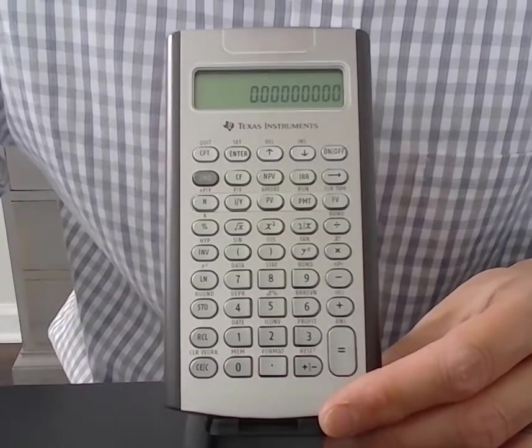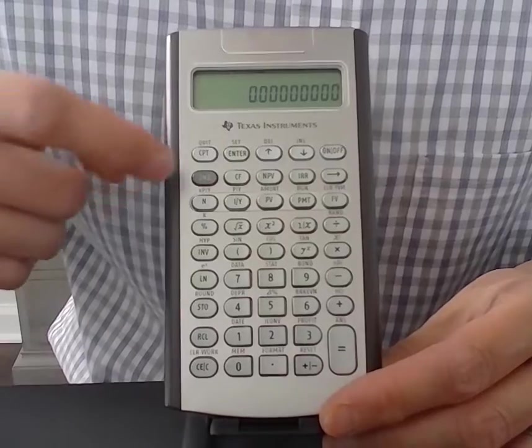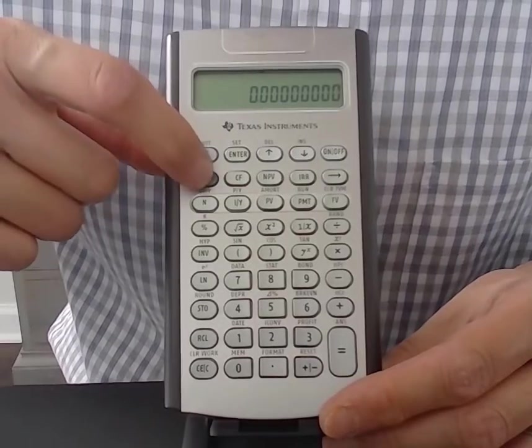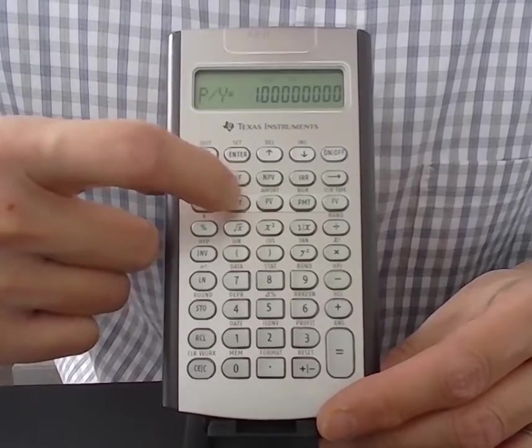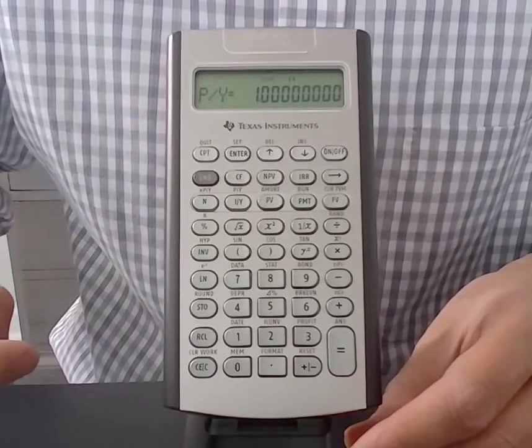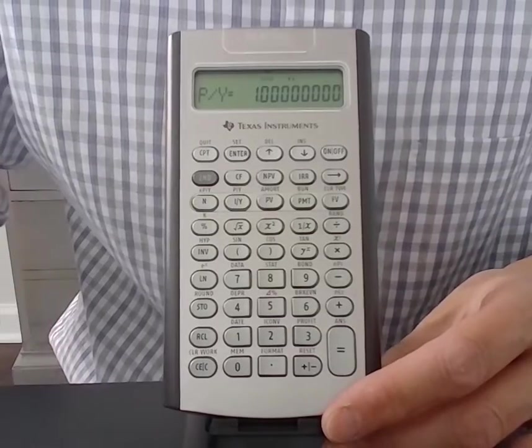A few other things to check for when you begin is that it is set to one period per year. So I'm going to press the second button and then this button here where it says I/Y but above it it says P/Y. That's telling us that the period per year right now is set to one. That is what we want, one period per year.